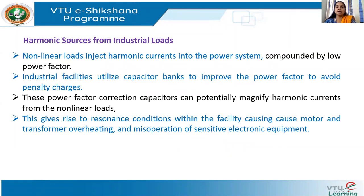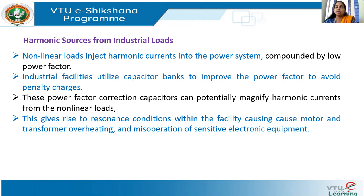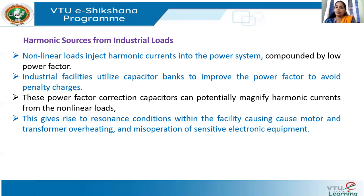In the last class, lecture 4, we saw some examples of commercial loads which are sources of harmonics. We saw sources like single-phase power supply, SMPS, capacitor banks, fluorescent lamps, and arcing devices. These are the main commercial loads which are sources of harmonics.